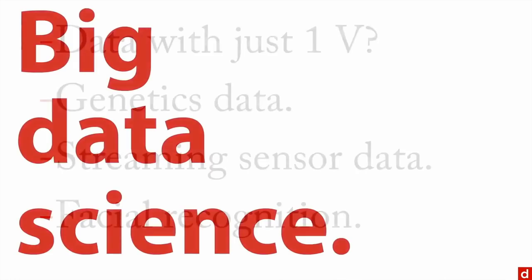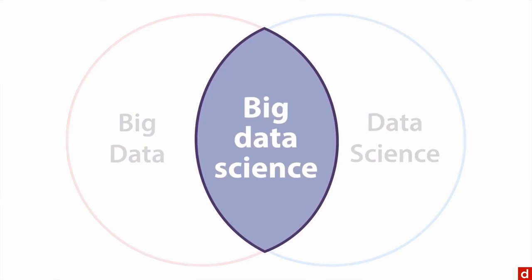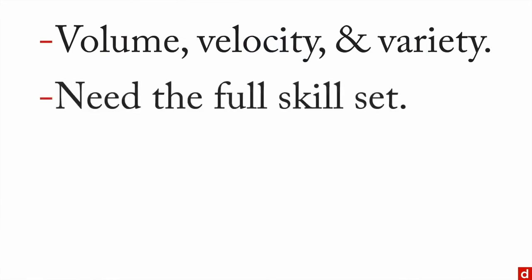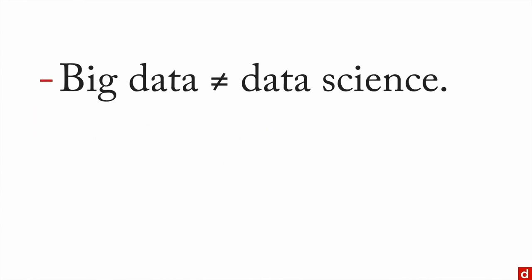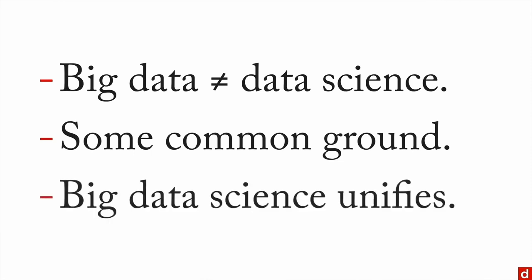Big data science — the middle — is a situation where you have volume, velocity, and variety together. If you have all three, you'll need the full data science skill set: coding, statistics, math, and domain expertise, primarily because of the variety. In sum: big data is not identical to data science. There's common ground, and people who are good at one are often good at the other, but they are conceptually distinct — with big data science as the shared middle ground that unifies them.